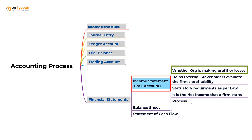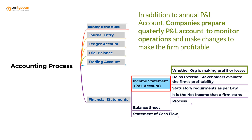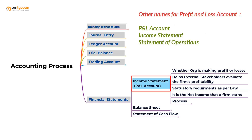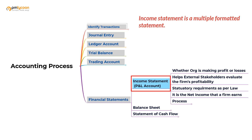There are two reasons to prepare a P&L statement. First, it tells whether the organization is making money and is a valuable tool to monitor operations. Companies usually prepare a quarterly P&L account in addition to the one at the end of the accounting period. Second, the P&L statement allows outsiders to evaluate the firm's ability to generate profits and manage its resources. It is also referred to as the income statement or statement of operations.